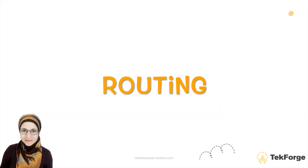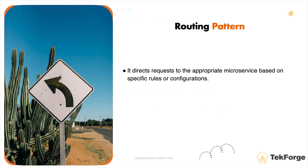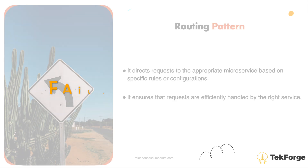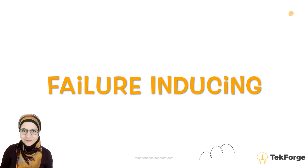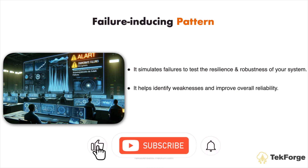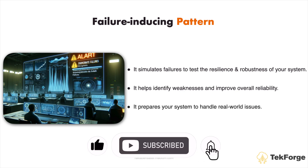Routing directs requests to the appropriate microservice based on specific rules or configurations, ensuring that requests are efficiently handled by the right service. Failure Inducing simulates failures to test the resilience and robustness of your system. It helps identify weaknesses and improve overall reliability by preparing your system to handle real-world issues.